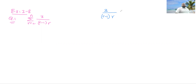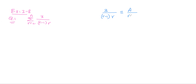How many factors are there? Two. So how many fractions shall we have? Two fractions. And this is going to be A over (r-1) plus B over r. Now you please complete it while I'm doing this on the board. So this is 3 equivalent to A·r plus B·(r-1).